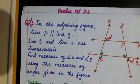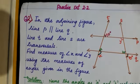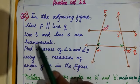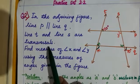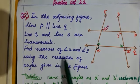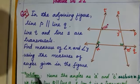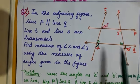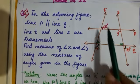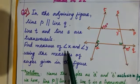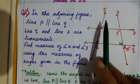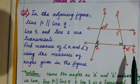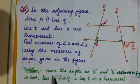Now question 2 of Practice Set 2.2: in the adjoining figure, line p is parallel to line q, and lines t and s are transversals. Find the measure of angle x and angle y using the measures of angles given in the figure. To find angle x, we take t as the transversal with p and q parallel.